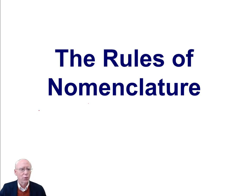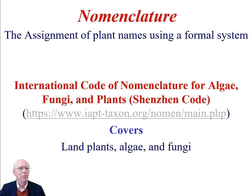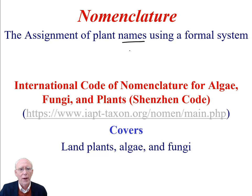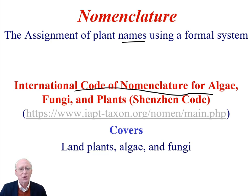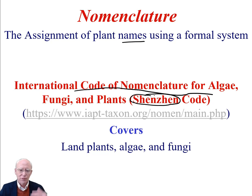We're going to continue our discussion of the rules of nomenclature and the way that plants have received their names. Nomenclature is the assignment of names to plants — these are formal scientific names, not the common names. The way this happens is governed by the International Code of Nomenclature for algae, fungi, and plants. There are various versions of this code; the latest one was compiled in Shenzhen, China, and they are re-edited and republished every six years.